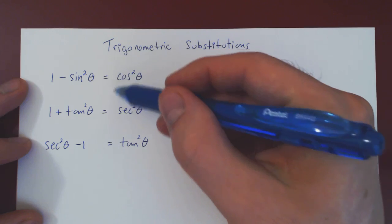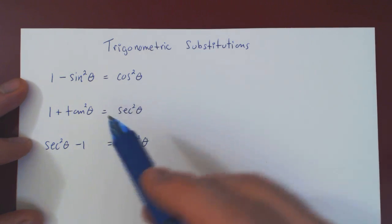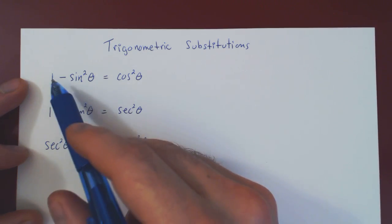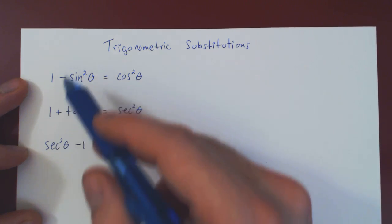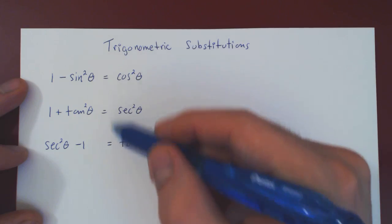And now you ask, why are these equalities interesting? Well, if you look on the left-hand side, we have either a difference or a sum of two terms. On the right-hand side, we have perfect squares.